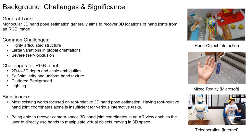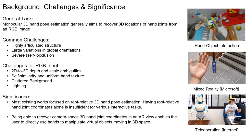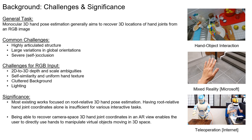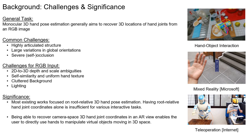Monocular 3D hand pose estimation remains challenging due to its highly articulated structure, large variations in orientations, severe occlusion, and inherent 2D to 3D scale and depth ambiguity. Due to these difficulties, most existing works focused on root-relative 3D hand pose estimation. However, having root-relative hand joint coordinates alone is insufficient for various interactive tasks.